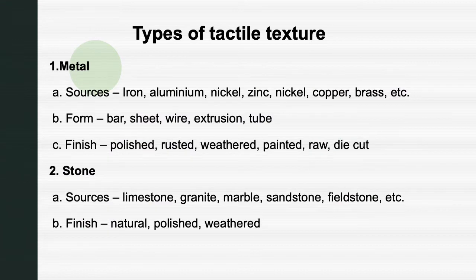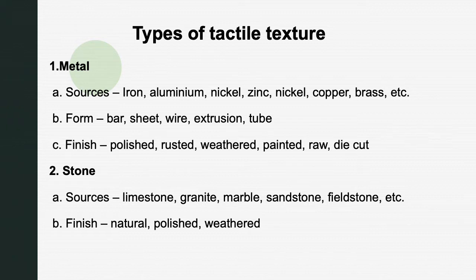Types of tactile texture — Metal: the sources of metal are iron, aluminium, nickel, zinc, copper, and brass. It is available in forms such as bar, sheet, wire, extrusion, and tube. The surface finishes used in designing include finished surface, polished, rusted, weathered, painted, raw, and dry cut — all are used in designing.